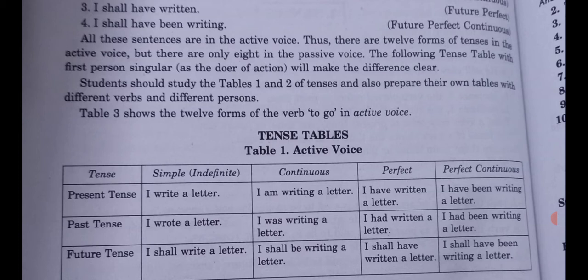For future tense, use will or shall plus the first form of the verb. Use shall with first person pronouns (I and we); use will with all other subjects. For future continuous: will or shall plus be plus V1 plus -ing. For future perfect: will or shall plus have plus the third form. Example: 'I shall have written a letter.' For future perfect continuous: will or shall plus have plus been plus V1 plus -ing. Example: 'I shall have been writing a letter.'